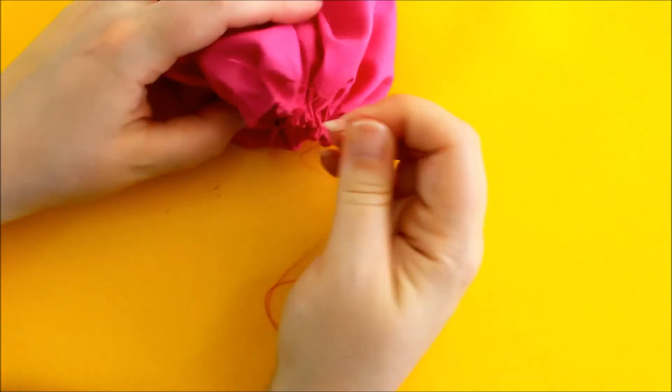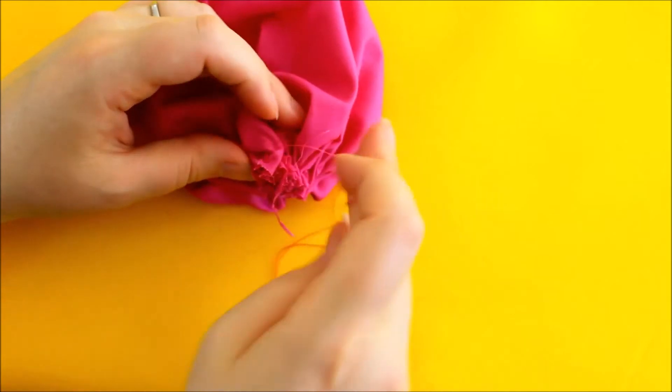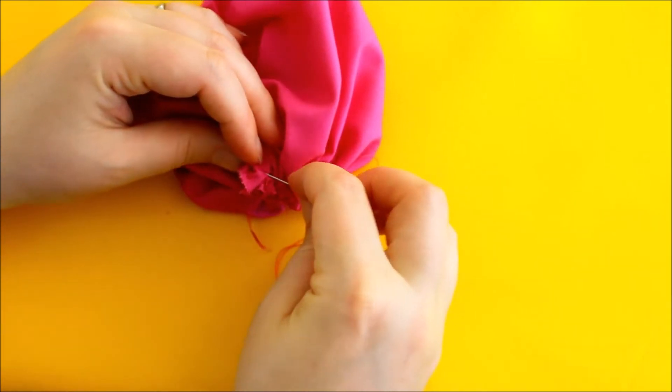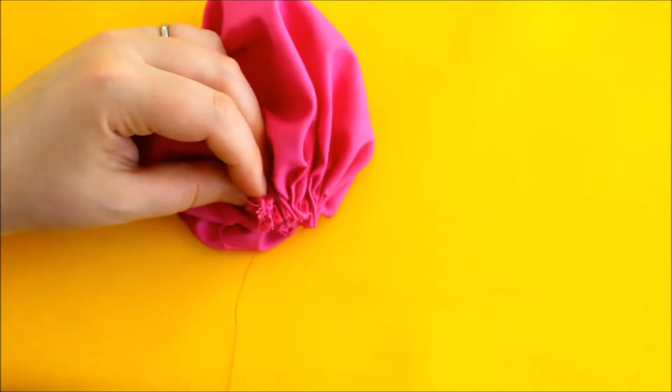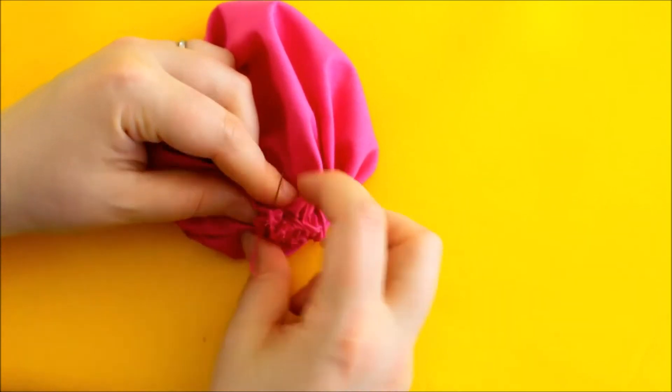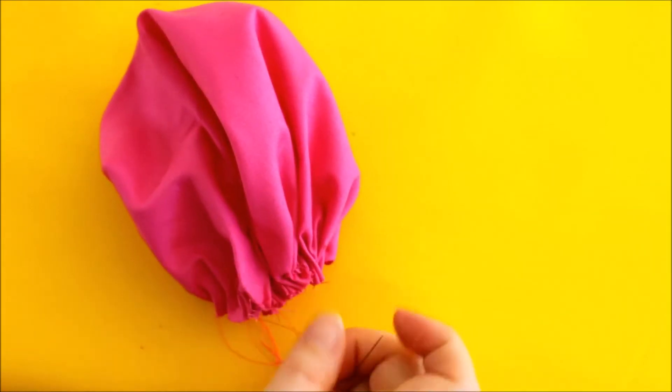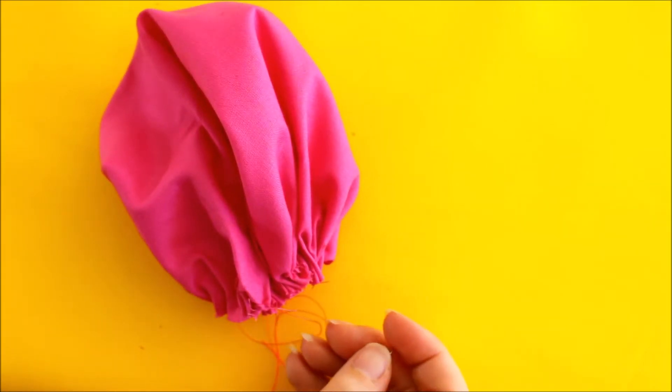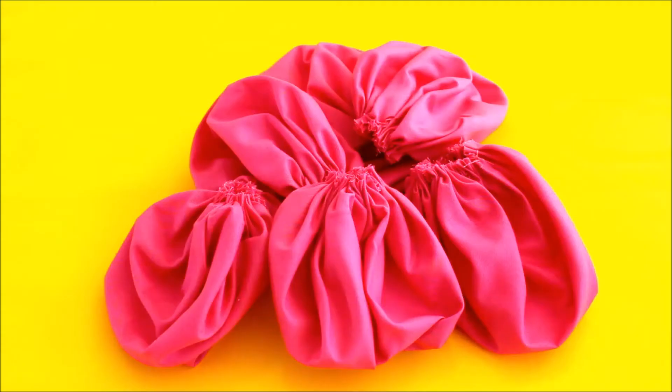So when you get at the end, it should be completely closed over like that. All you're going to do is just to tie a knot again at the end. And there you have it. Your first petal is already done. So you just repeat that for all the other petals. Now you've got all seven of your petals sewn.